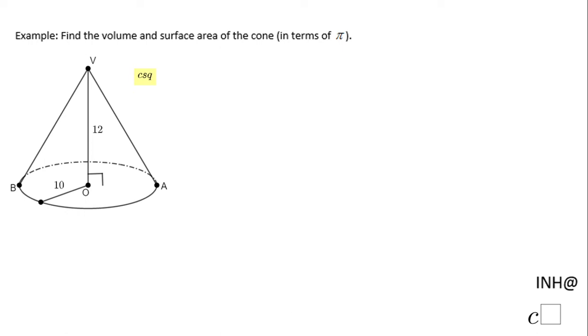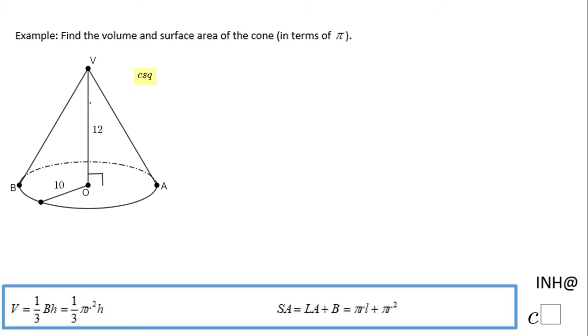Welcome or come back to I Need Help at C Squared. In this example we need to find the volume and the surface area of this cone. For that reason I'm going to use these two formulas you see down here.